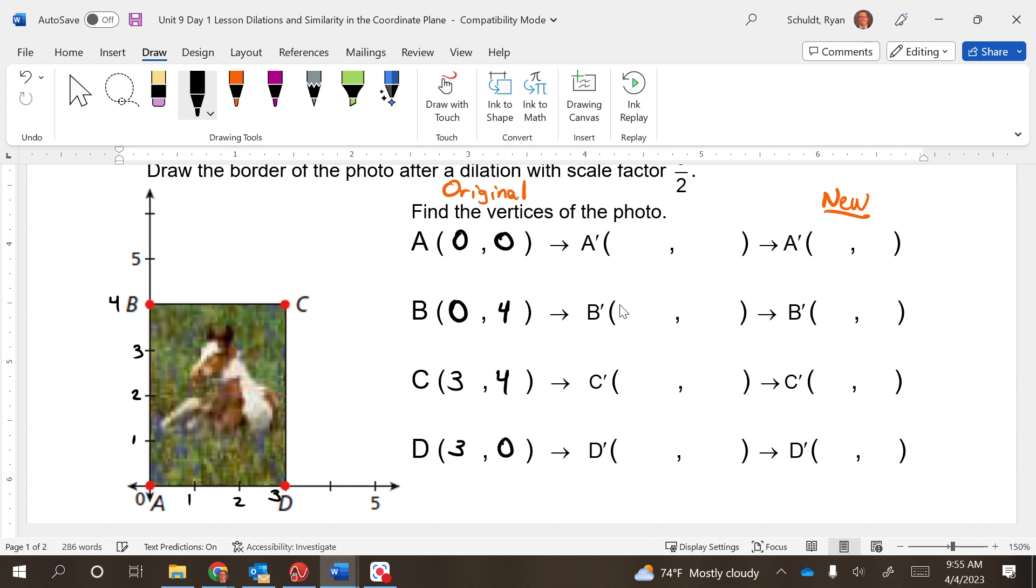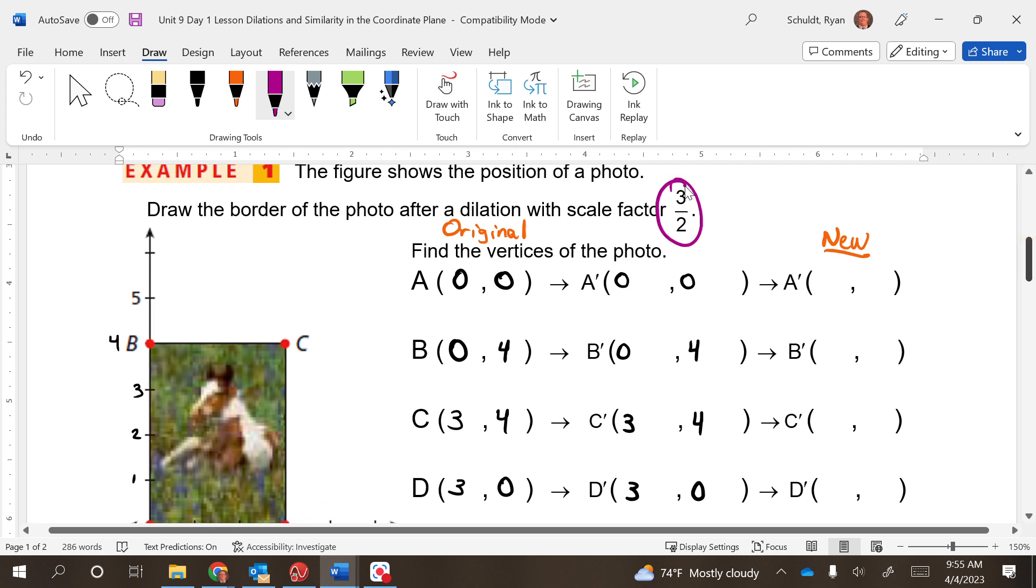D is at (3, 0). Now, in this middle column, that is so we can go through and multiply our original point by our scale factor. So I'm going to set things up here. Then we're going to come through, our scale factor it told us is three halves.